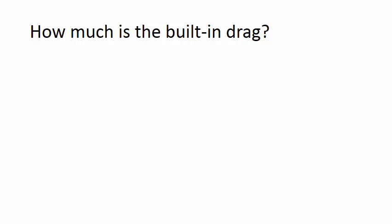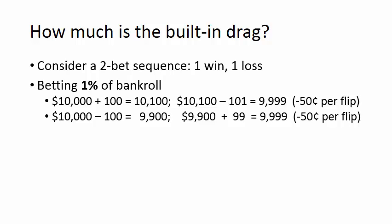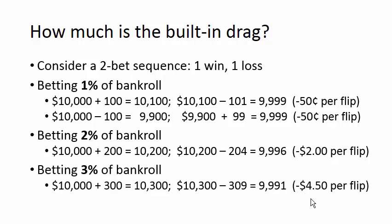When you bet a fraction, there is a built-in drag. You can calculate it by looking at a two-bet sequence — one win and one loss. If you're betting 1% of your $10,000 bankroll and you win, your bankroll grows to $10,100 and your next bet is $101. If you then lose, it takes you down to $9,999 — a loss of $1 in two flips, or $0.50 per flip. If you bet 2% of your bankroll, you lose $2 per flip; betting 3%, you lose $4.50 per flip. The built-in loss grows rapidly as you bet a larger percentage of your bankroll.